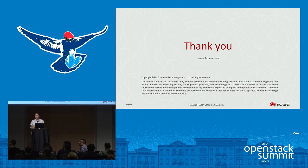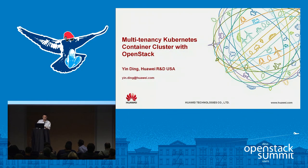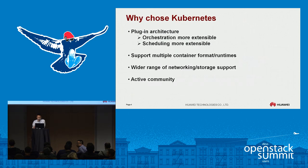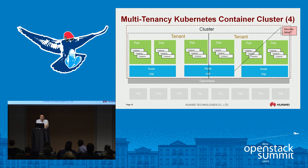Hi, I'm Adam Young from Red Hat, Keystone Core. I have some questions about the multi-tenancy aspect. You showed the potential and had a slide with the security access issue. Did you end up implementing this such that the resources used for the Kubernetes cluster came from multiple projects within Keystone? And if so, how did you resolve the security issues there? The answer is we implemented this already. The security issue is addressed on the next page — the secure container approach.